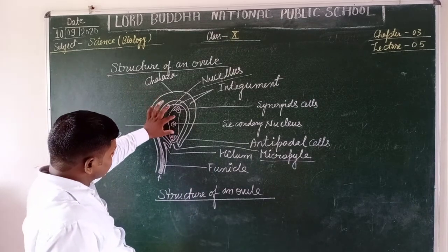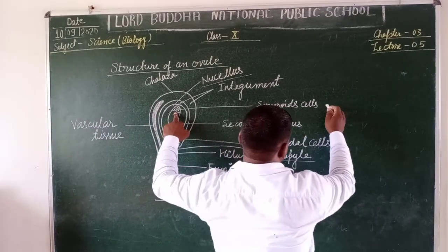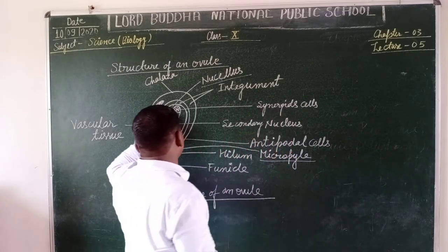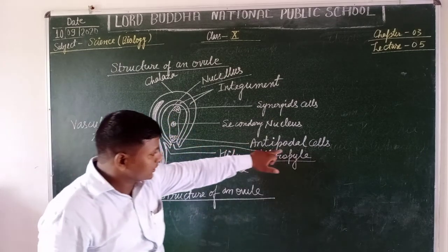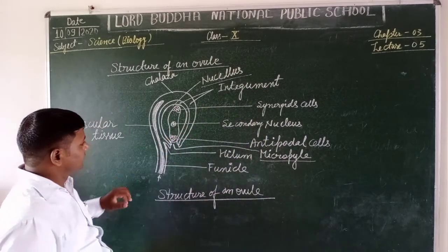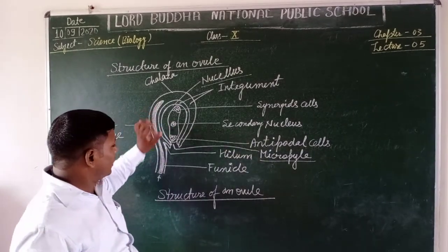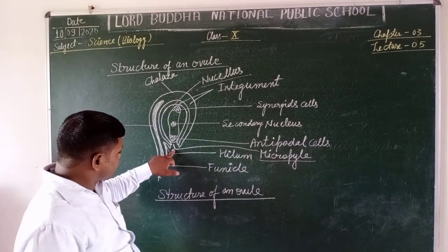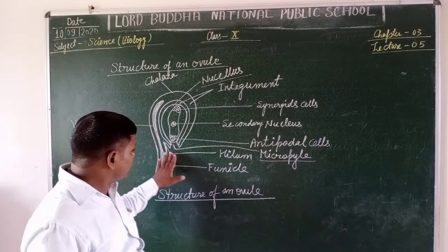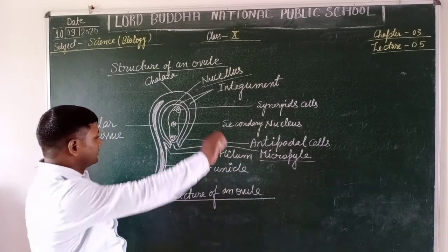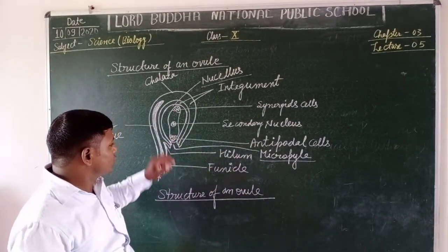The ovule is a seven-cell structure. The three uppermost cells are called synergid cells — they are haploid cells. The remaining three basal cells are the antipodal cells, also haploid. A central secondary nucleus cell is present having two haploid sets of chromosomes. When the pollen tube enters through the micropyle, it first attaches to and fuses with one synergid cell, which is also called the egg cell.